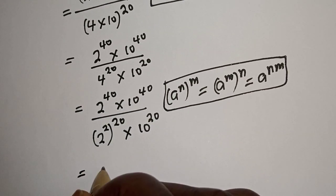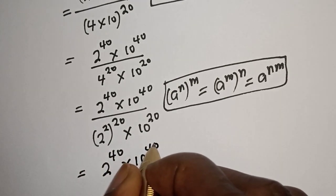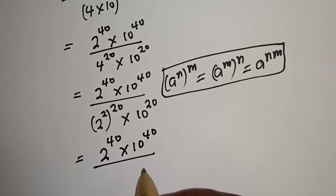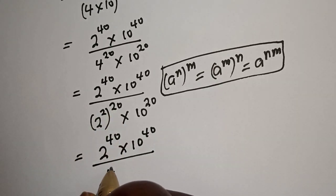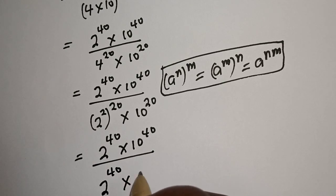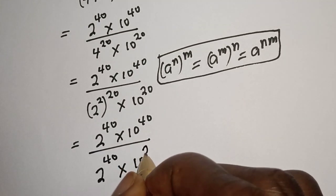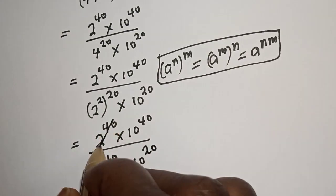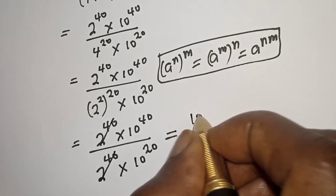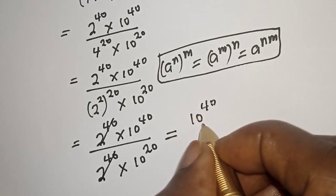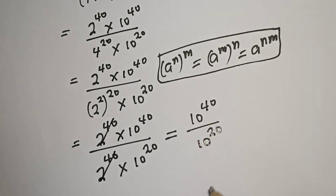This equals 2 raised to power 40 multiplied by 10 raised to power 40, divided by 2 raised to power 40 multiplied by 10 raised to power 20. The 2 raised to power 40 terms cancel, leaving 10 raised to power 40 divided by 10 raised to power 20.